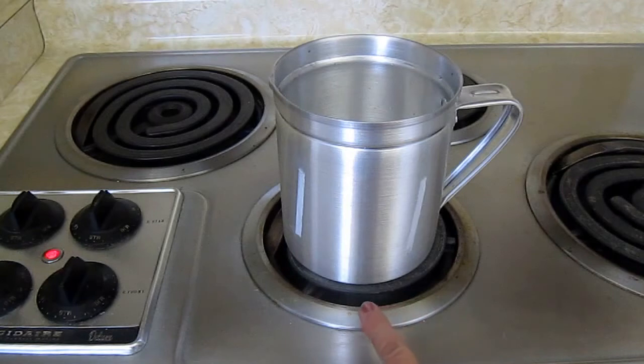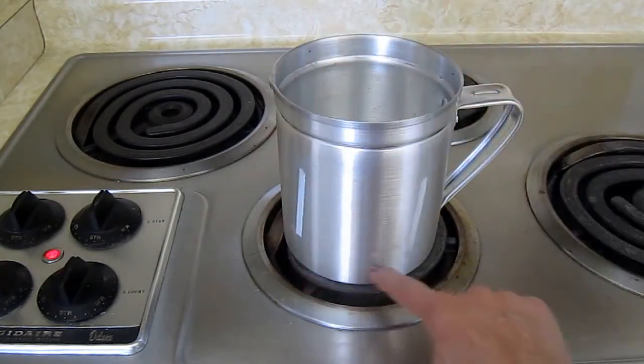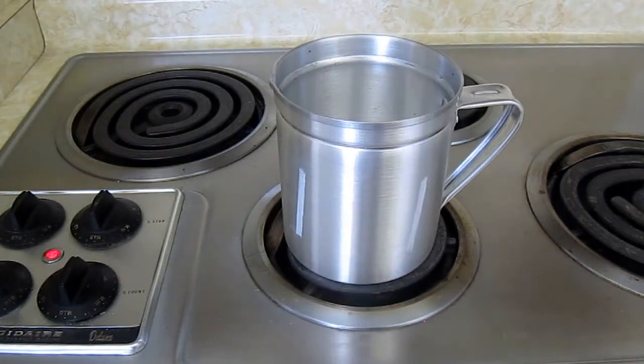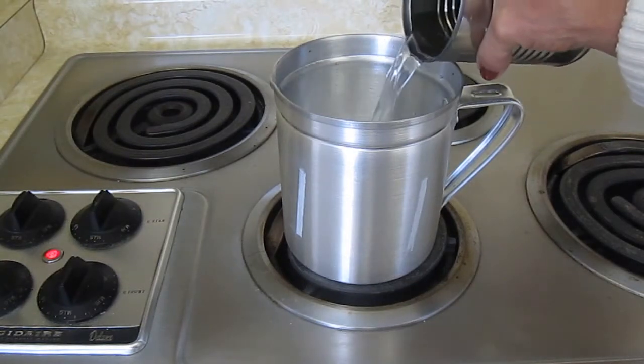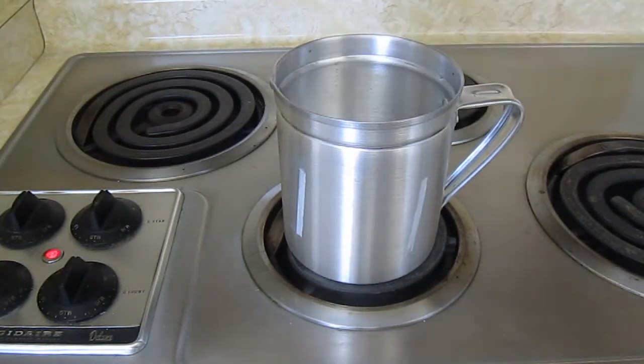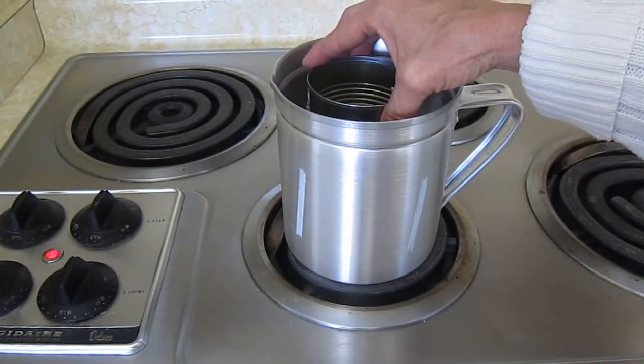Make sure you put it on a burner that fits. Don't put it on one that's way too large. Put it on the smallest burner that's closest to the size of the pot. Pour water in it, then you take your other can and put it down inside. That's where you're going to put your wax.